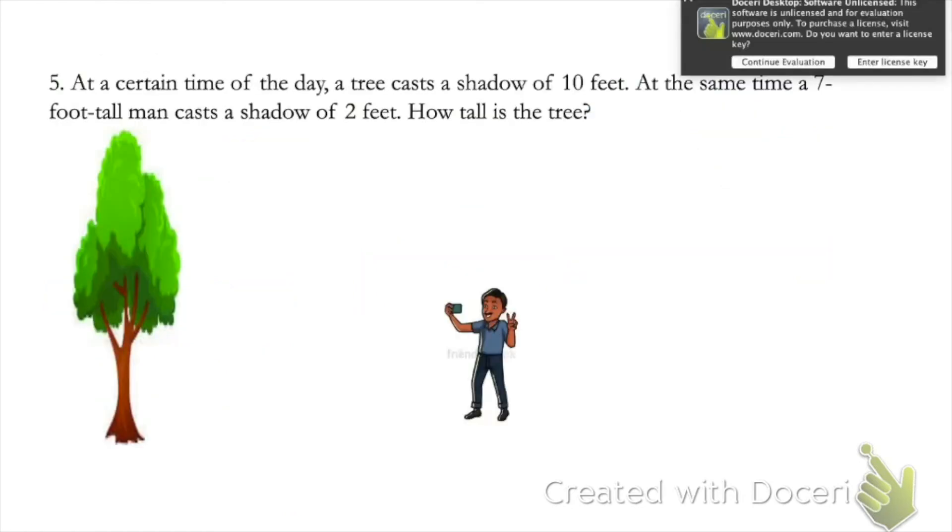At a certain time of the day, a tree casts a shadow of 10 feet. At the same time, a seven foot tall man casts a shadow of two feet. How tall is the tree? Whenever we're getting into word problems here, I think it's so important for you to draw pictures. And I don't mean just drawing a triangle. Like I mean, I want to see a tree drawn and a man, whether he's taking a selfie or not, doesn't matter. But I want to see pictures drawn with these objects in them.